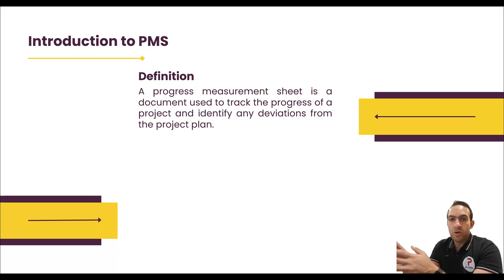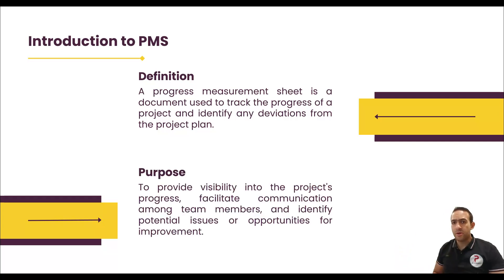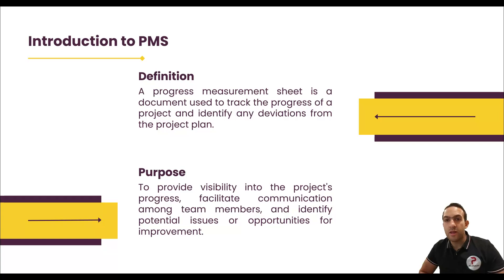The Progress Measurement Sheet is a document used to track the progress within a project and identify deviations from the project plan. Its purpose is to provide visibility into the project's progress and facilitate communication among team members, while helping to identify potential issues or opportunities for improvement.